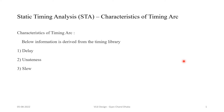Hi friends, welcome back. In the last chapter of the Static Timing Analysis series, we got to know about the second characteristic of a timing arc, which is unateness. We saw what unateness is and the three types a timing arc can have: positive unateness, negative unateness, and non-unate. Now in this video, we are going to cover the third characteristic of a timing arc, which is slew.